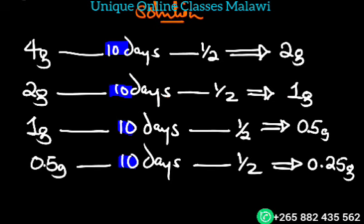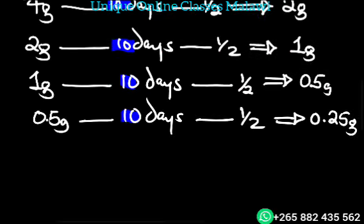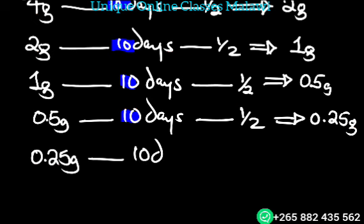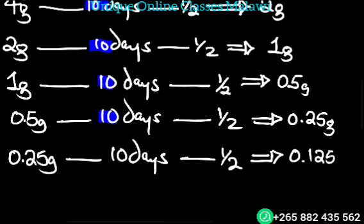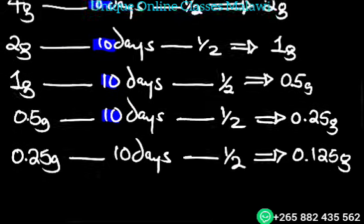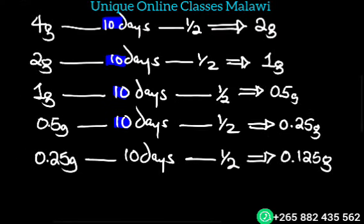We will get to the next 10, 20, 30, 40. We will start at 0.25 grams. After 10 days, we will find half of 0.25, so 0.25 divided by 2 is 0.125, so we are going to have 0.125 grams. After 50 days we will have this mass.